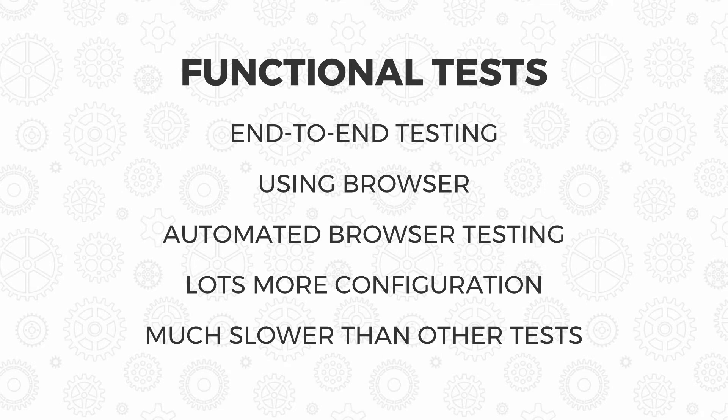Finally, we've got functional tests, sometimes known as end-to-end tests. These test the whole application. Normally you'd use a browser for this with some automated browser testing. You'll have a lot more configuration to set these up, and they're a lot slower than integration or unit tests, so you'll have a lot less of these. You have to be careful because you're testing things on the screen or interactions through the website — things being clicked. Sometimes that can make them more brittle when relying on user interface data.